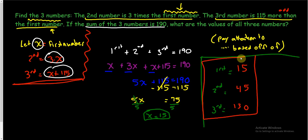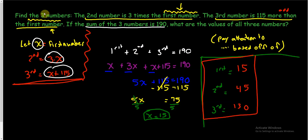We have answered the question. That was pretty involved, but practice this on your own with the homework. The key things to realize: the other two numbers are described based off of the first, so we let that be x. Because of their descriptions and calling the first number x, you're able to write expressions to represent the second and third. And then once you have something to stand for all three, they give you a way to put them into one equation — they're just added up to 190. Once you put the math and logic together, it's not too bad.